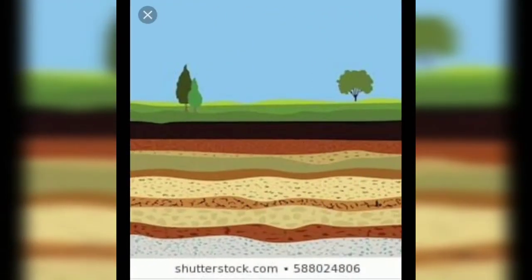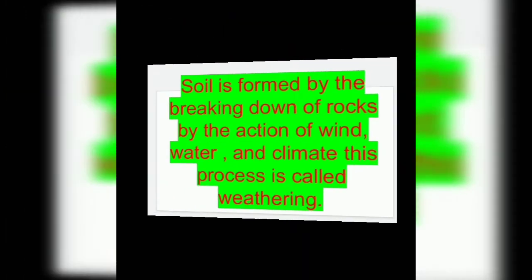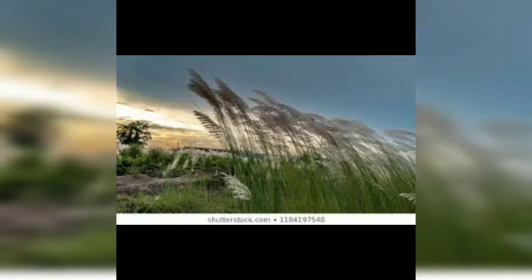Now we are going to learn how soil is formed. Soil is formed by the breaking down of rocks by the action of wind, water and climate. This process is called weathering.